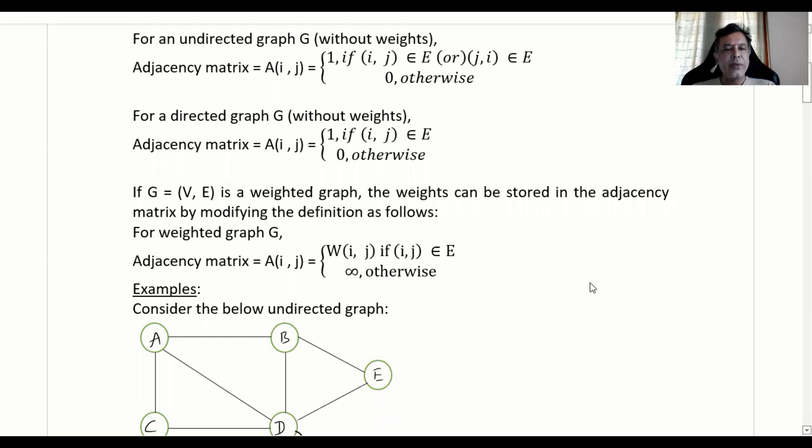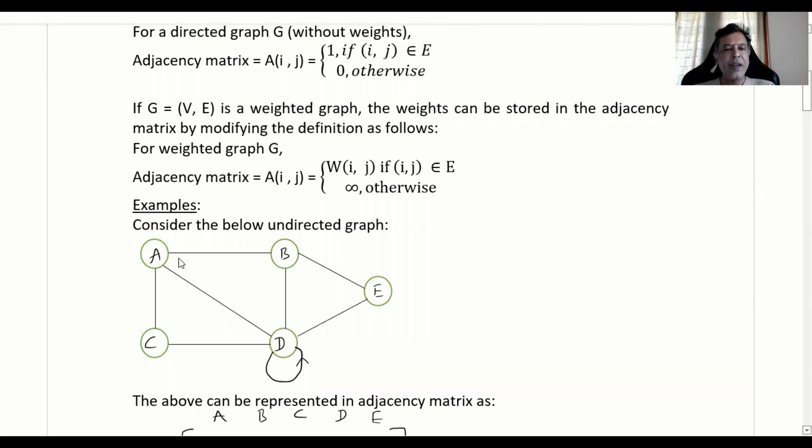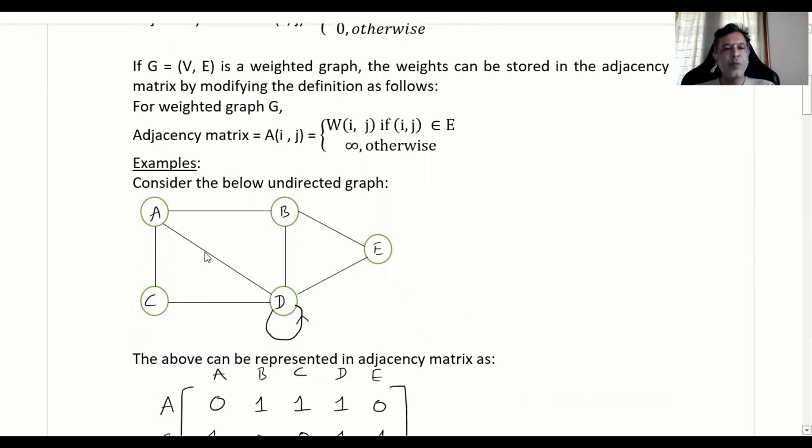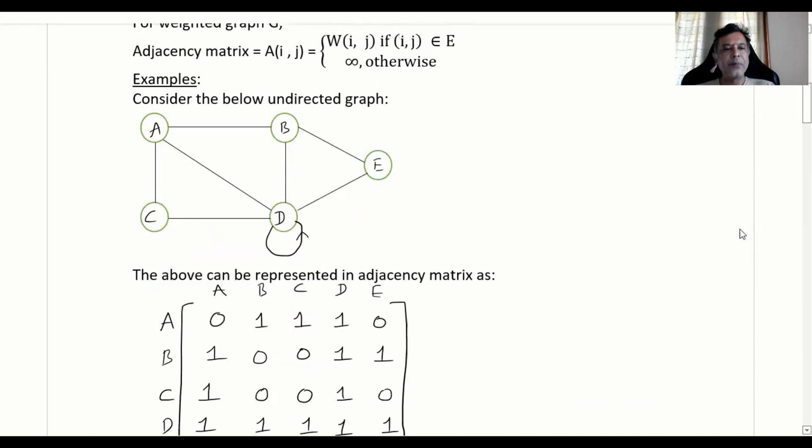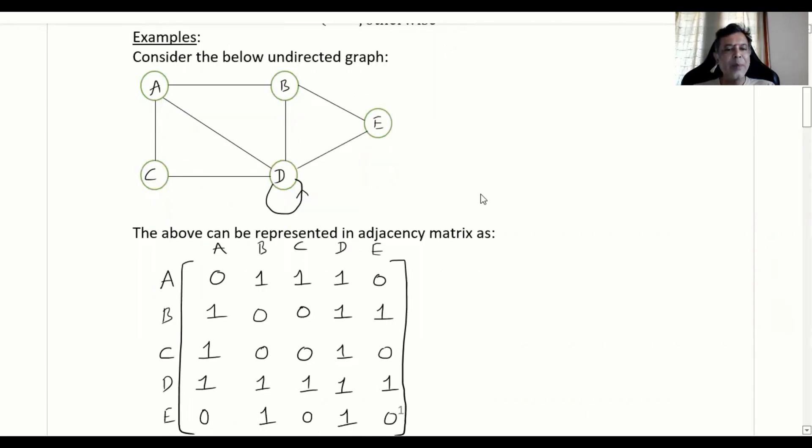Let us understand these things through the following examples. Consider the below undirected graph having five vertices A, B, C, D, E and there is a self loop for D also. So if it has to be represented in an adjacency matrix, there is no self loop from A to A so that is 0, same for B, E, and C. All those diagonal elements will be zeros except for D. So row D, column D, you have 1. All other principal diagonal elements are zeros.